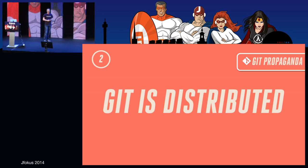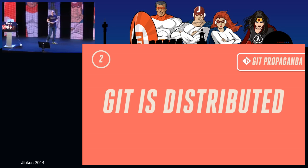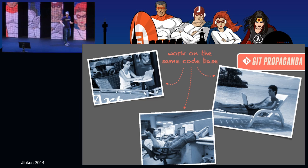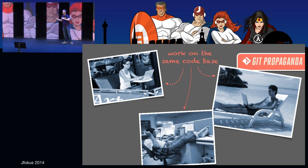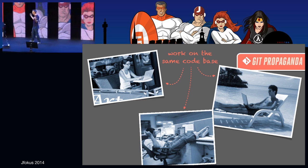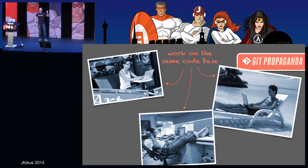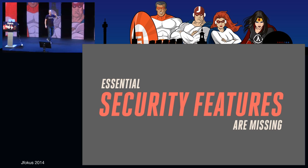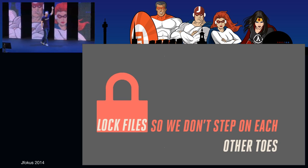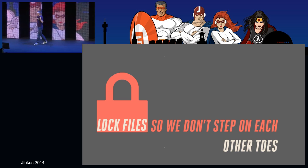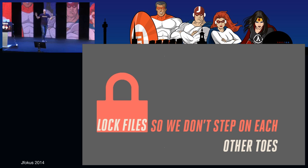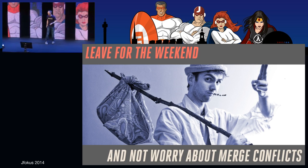Argument number two. This is what the Git propaganda tells us: Git is distributed, and developers can code independently — on the beach, in the office, or in a coffee bar — and then merge, and merging is a breeze. But really, it's missing some essential security features. Like locking files. Locking files is awesome — we don't want to step on each other's toes. I can lock a file, code independently, then unlock it so other people can work on it.